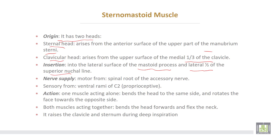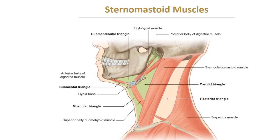The nerve supply: motor supply from the spinal root of the accessory nerve, while proprioceptive and sensory supply from the second cervical nerve. Action of the sternomastoid muscle: if one muscle acting alone, it bends the head to the same side and rotates the face towards the opposite side. If both muscles acting together, they bend the head forwards and flex the neck. It also raises the clavicle and sternum during deep inspiration.